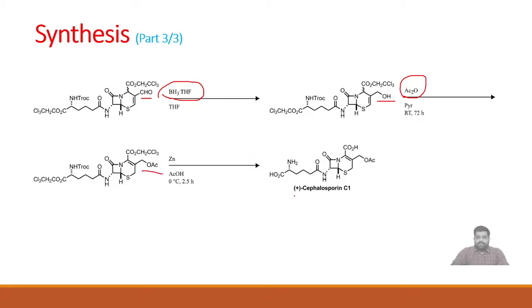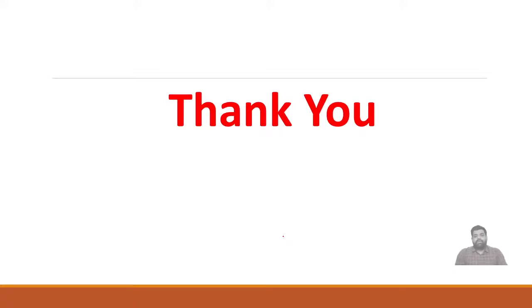The final step to reach cephalosporin is drug deprotection and ester hydrolysis. This was achieved by zero degree reaction of zinc and acetic acid. Zinc and acetic acid deprotect this NH and hydrolyze this ester to give our final product, cephalosporin C1. This total synthesis was published by R.B. Woodward, the great organic chemist, in 1966. I hope you understood this total synthesis. If you have any problem, feel free to ask me. Thank you very much.